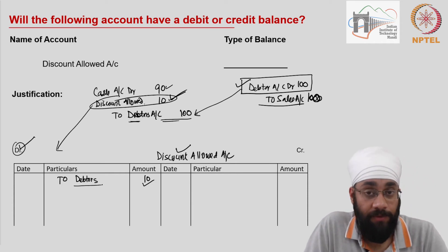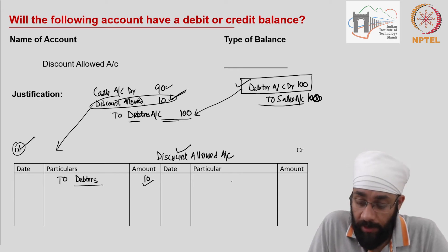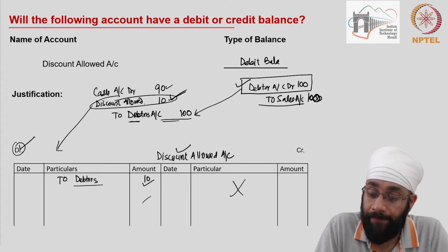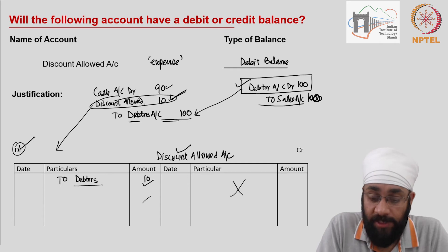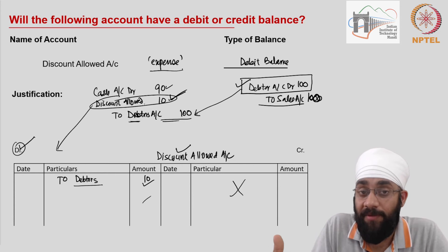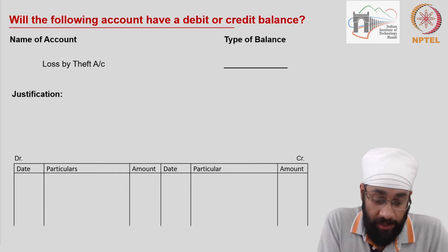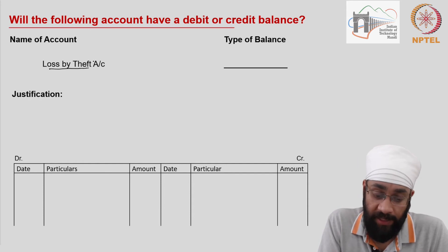There is no other journal entry involving discount allowed, so there will be nothing on the credit side. It will always have a debit balance. This is an expense in the sense that it helps you generate revenue — you are promoting recovery of money from customers. The next item is loss by theft: you are losing goods because of theft.